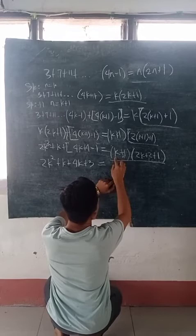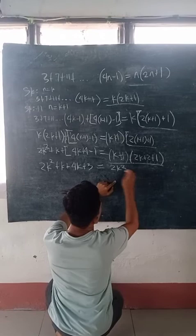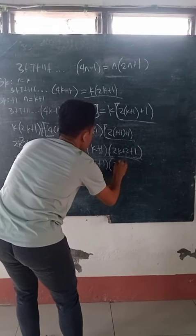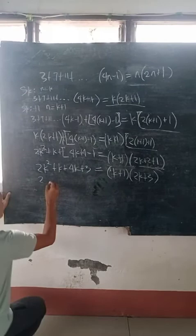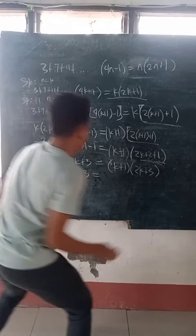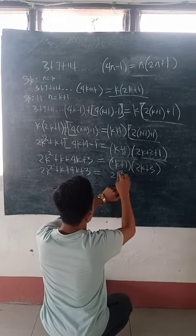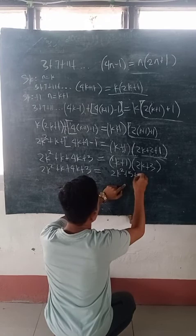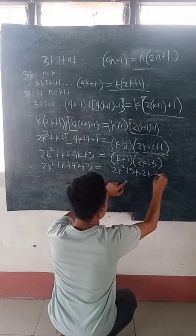Now using the FOIL method again on the right side: k plus 1 times 2k plus 3. So k times 2k is 2k squared, k times 3 is 3k, 1 times 2k is 2k, and 1 times 3 is 3.